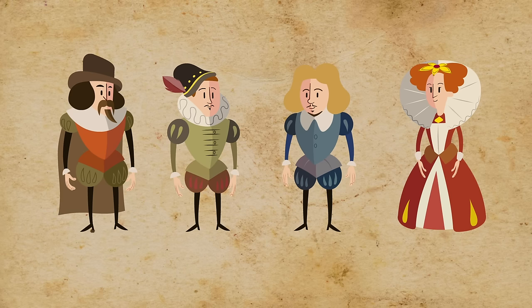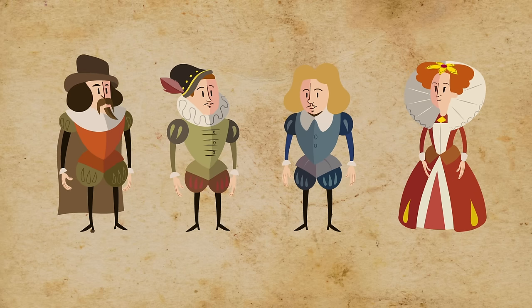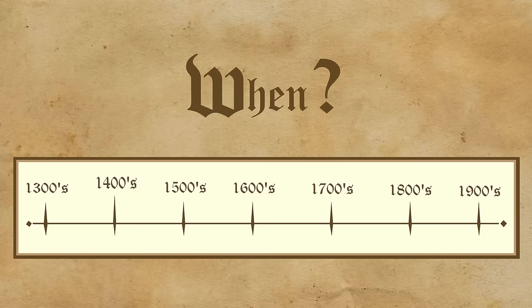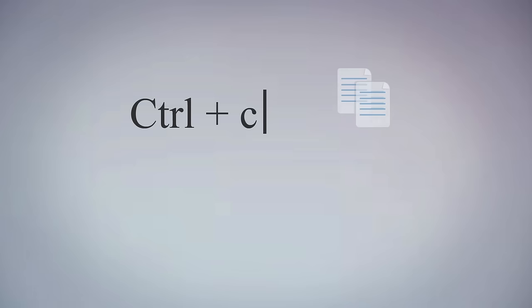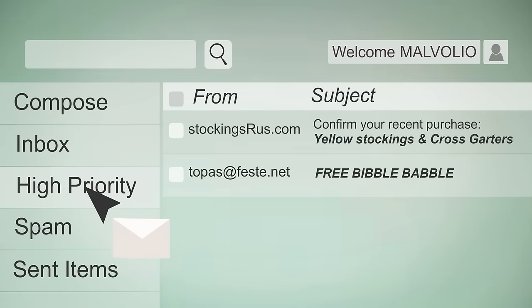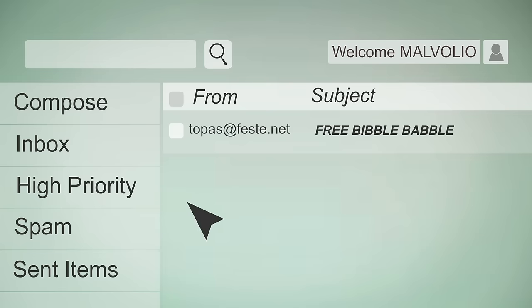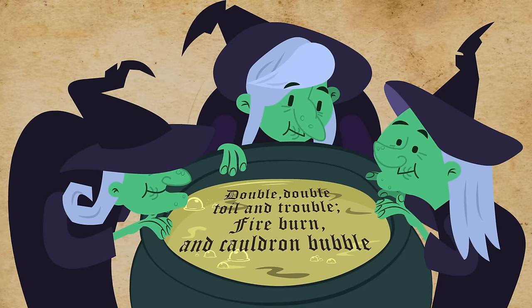Shakespeare's identity is only one of the many problems stylometry can resolve. It can help us determine when a work was written, whether an ancient text is a forgery, whether a student has committed plagiarism, or if that email you just received is of high priority or spam.